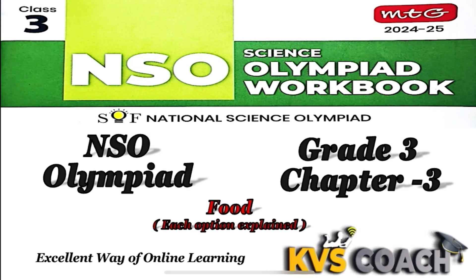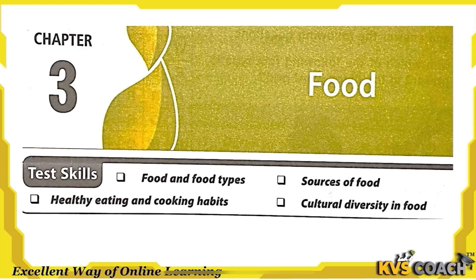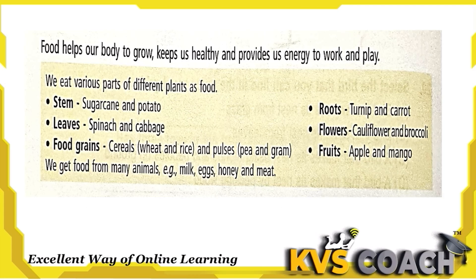Hello dear kids, now we are going to start Chapter 3 from your NSO Olympiad workbook for Grade 3, and the chapter name is Food. In this chapter we are going to discuss food and food types, sources of food, healthy eating and cooking habits, and cultural diversity in food.